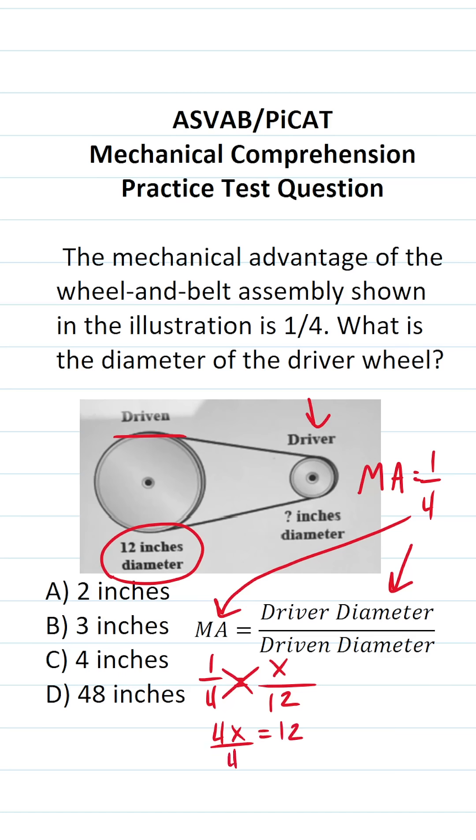Divide both sides by four to get X by itself. This says X equals 12 divided by four, which is three. So we can see that the diameter of the driver wheel is going to be three inches.